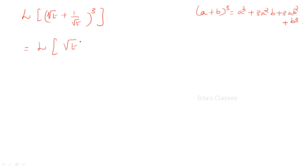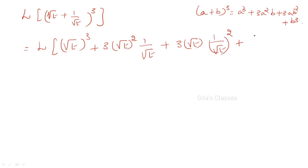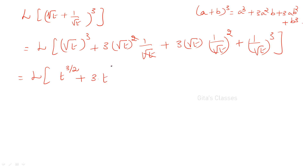So, L of (√t)³, which is t^(3/2), plus 3 × (√t)² × (1/√t), where a = √t and b = 1/√t, plus 3 × √t × (1/√t)², plus (1/√t)³. This simplifies to L of t^(3/2) + 3t + 3t^(-1/2) + t^(-3/2), since bringing 1/√t to the numerator gives t^(-1/2) and (1/√t)³ gives t^(-3/2).